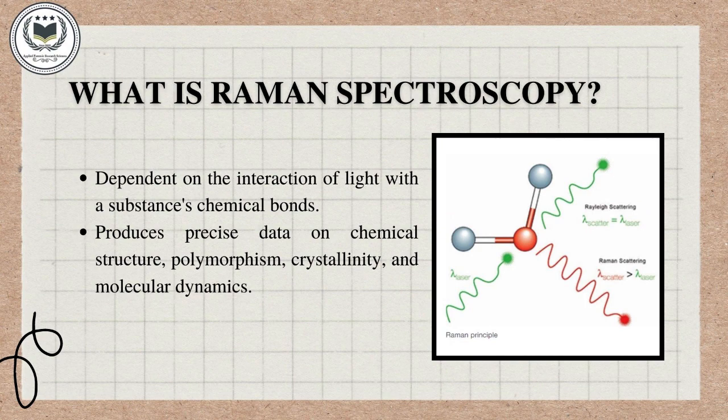What is Raman Spectroscopy? It is dependent on the interaction of light with a substance's chemical bonds. It produces precise data on chemical structure, polymorphism, crystallinity, and molecular dynamics.